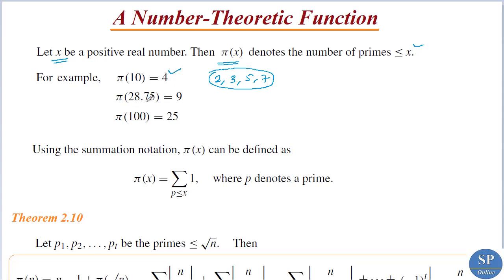π(28.75) is equal to 9 — there are 9 primes less than or equal to 28.75. π(100) is equal to 25 — there are 25 primes less than or equal to 100. We already discussed this in the previous lecture using that algorithm.